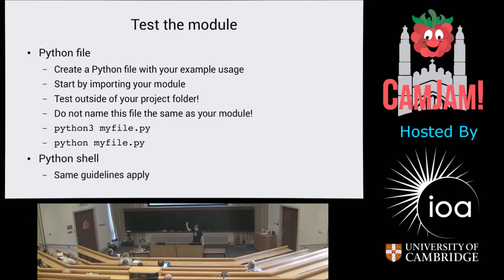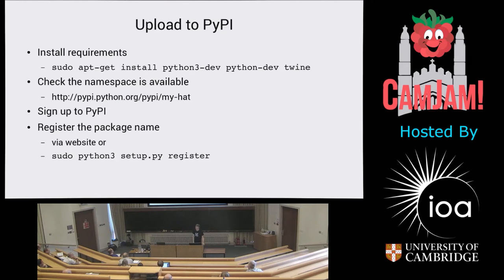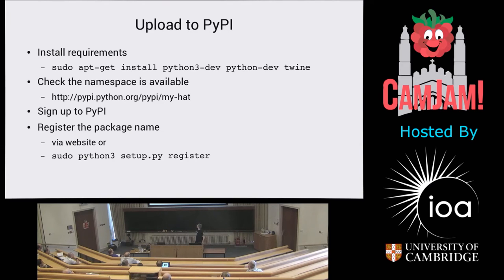If you have any problems, go back and fix things, bump the version number, try reinstalling, and continue until it works. When you're ready to upload, install the Python dev packages and something called Twine. Ensure the namespace is available — browse to pypi.python.org/pypi/whatever-your-thing-is-called and check nobody has already used that namespace. If it's available, sign up to PyPI with a user account, and you can either register through the website by filling out a form or run 'python setup.py register' which will ask for your username.